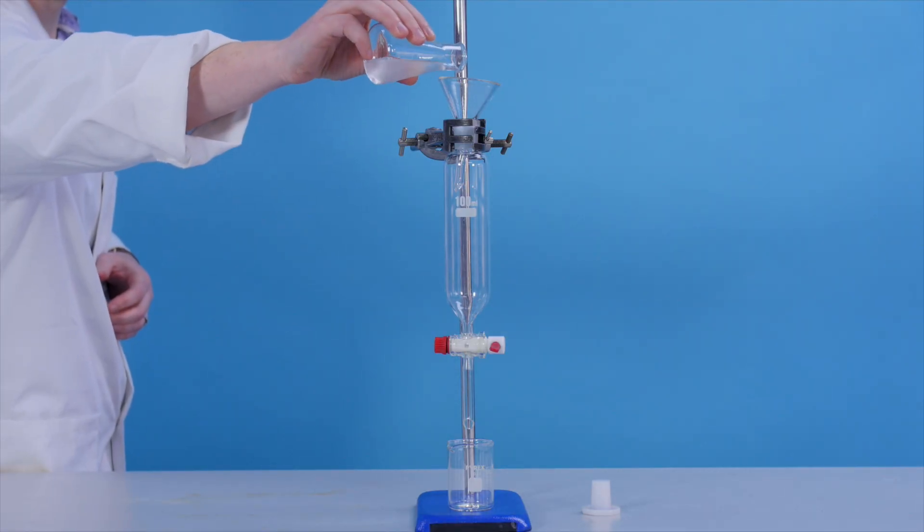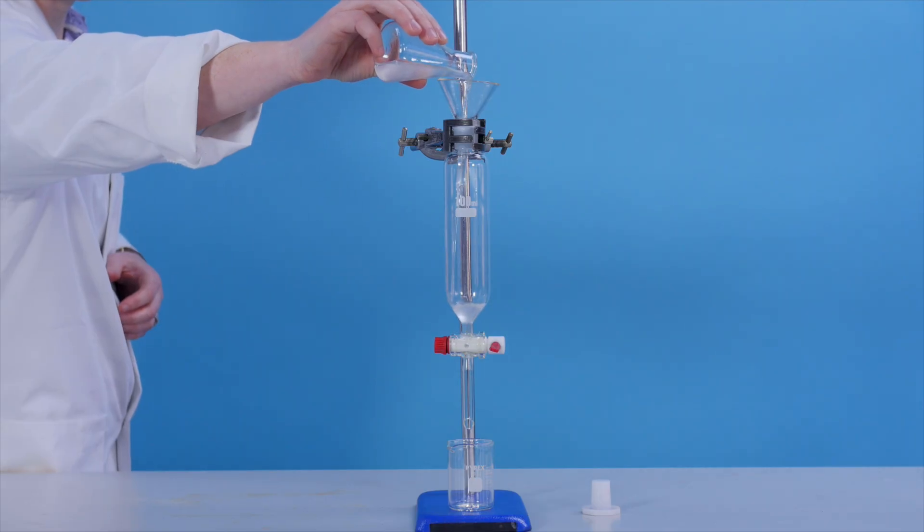We have made our product and separated it from the reaction mixture. Now we need to purify it. Transfer the impure cyclohexene to a separating funnel.